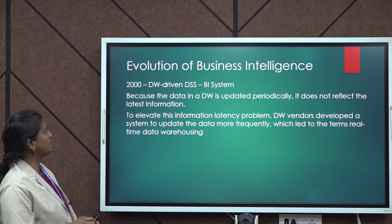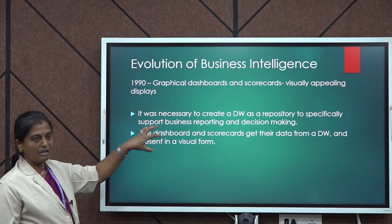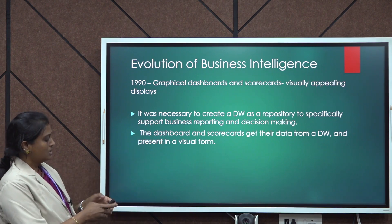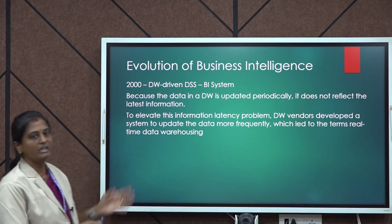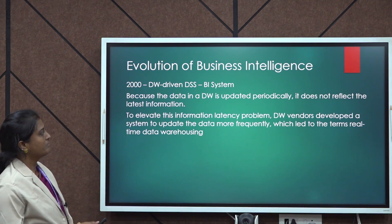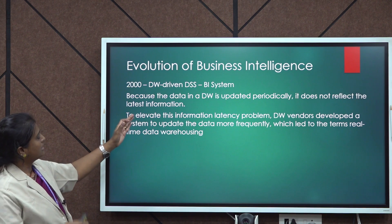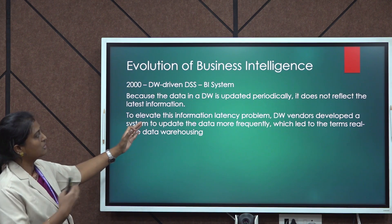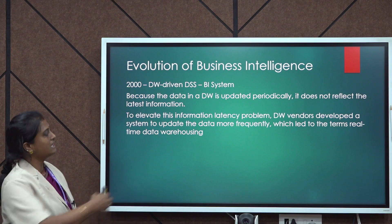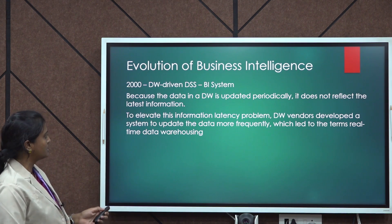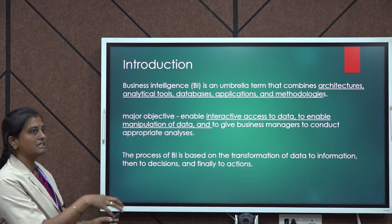In 2000, business intelligence evolved further. When data is stored in a data warehouse and updated frequently, it may still not reflect the latest information as the business grows. To handle large volumes of incoming and outgoing data, business intelligence introduced real-time data warehousing to ensure the most current information is always available.